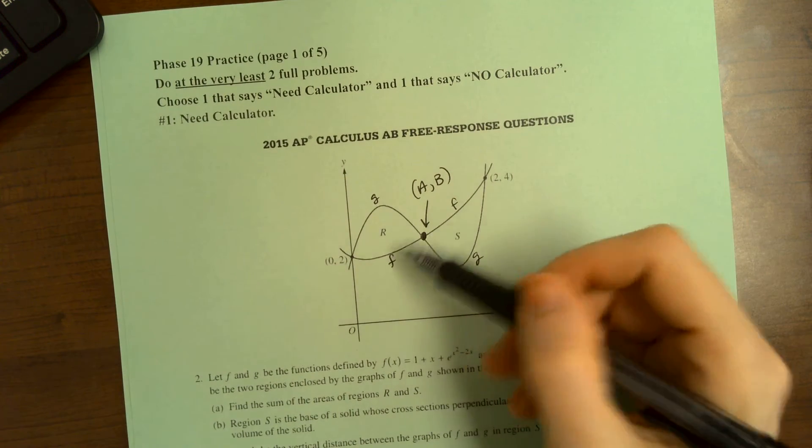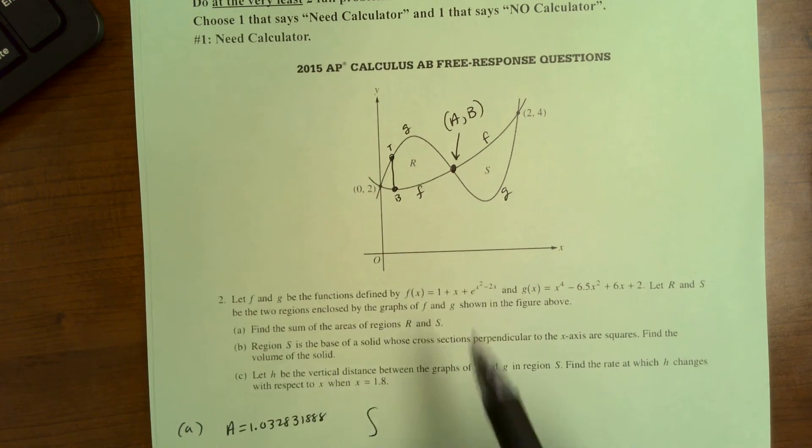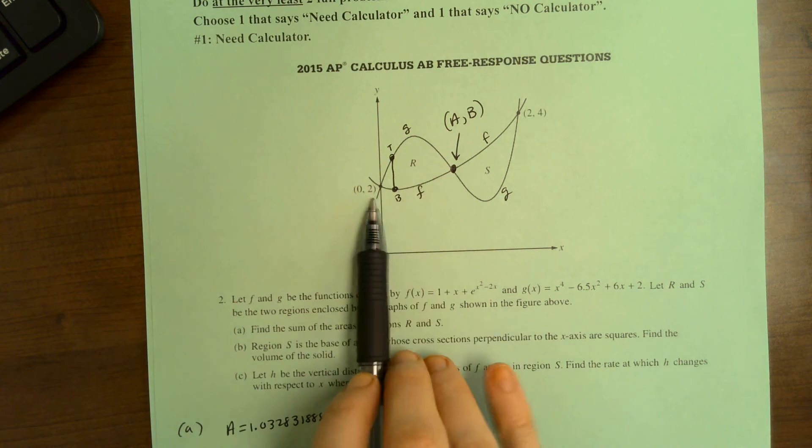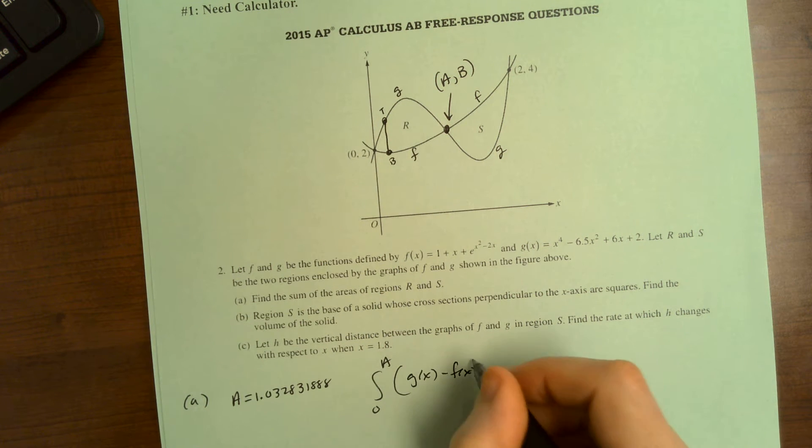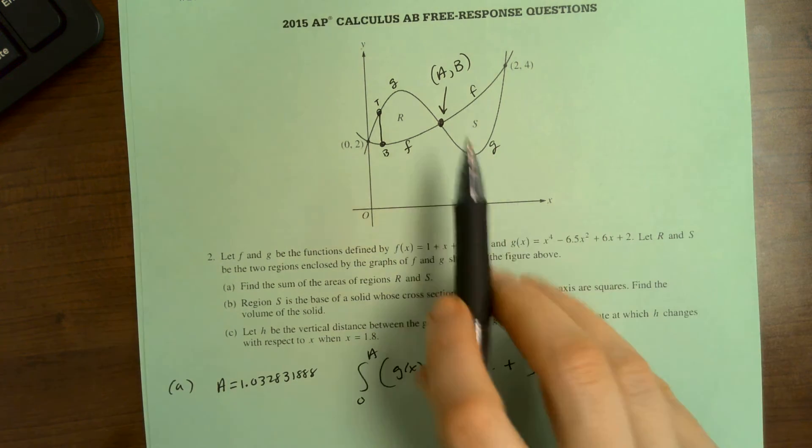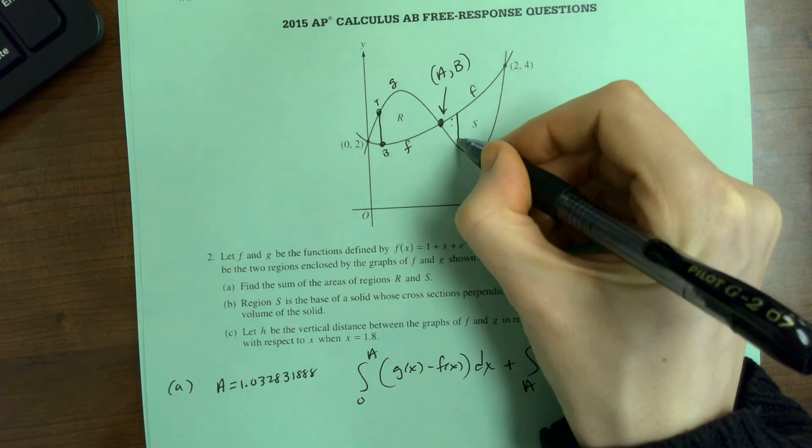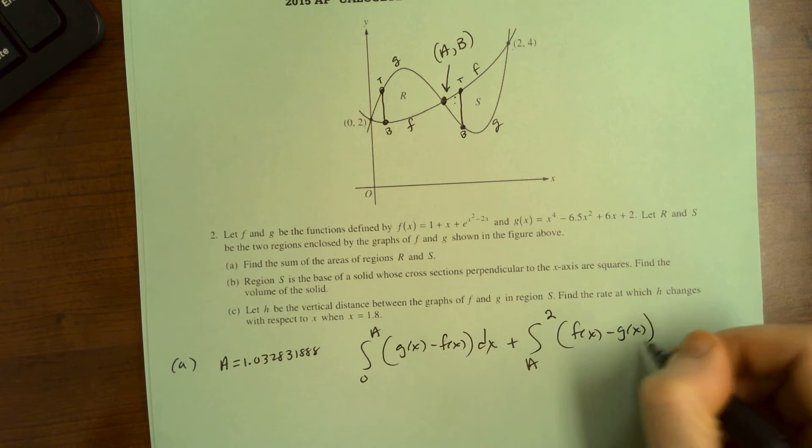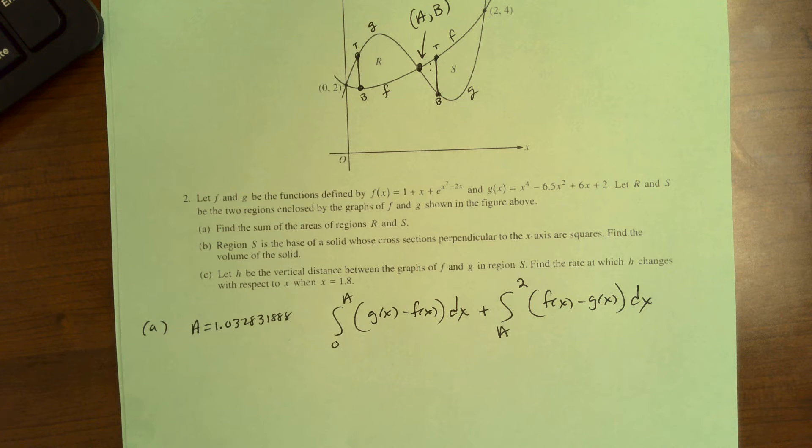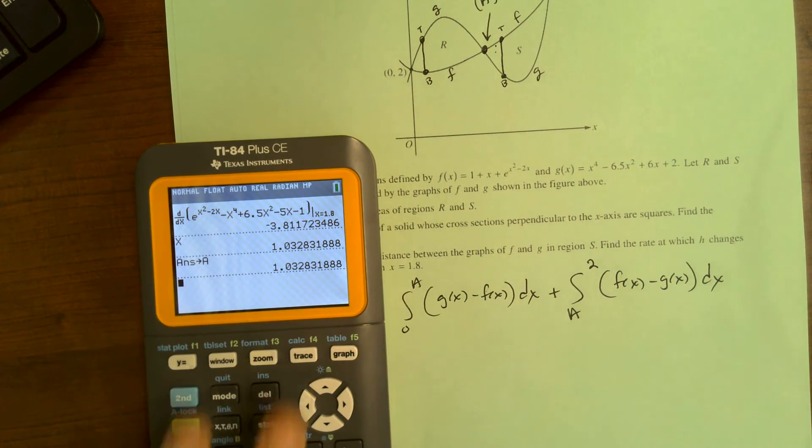And then I will do the integrals. So for this first region, you do like a little vertical line, the top function is G. The bottom function is F. And it stays the same on this whole region R. And this region R goes from 0 to A. So here G is on top and F is on the bottom. Plus. Now for this region, I'm going to pick back up at A and I'm going to go all the way to the end of the region, which has an X value of 2. And this time, when you do like the top minus bottom, F is the top function. So it's going to be F of X minus G of X. Remember to pause the video and try it yourself guys as much as possible.